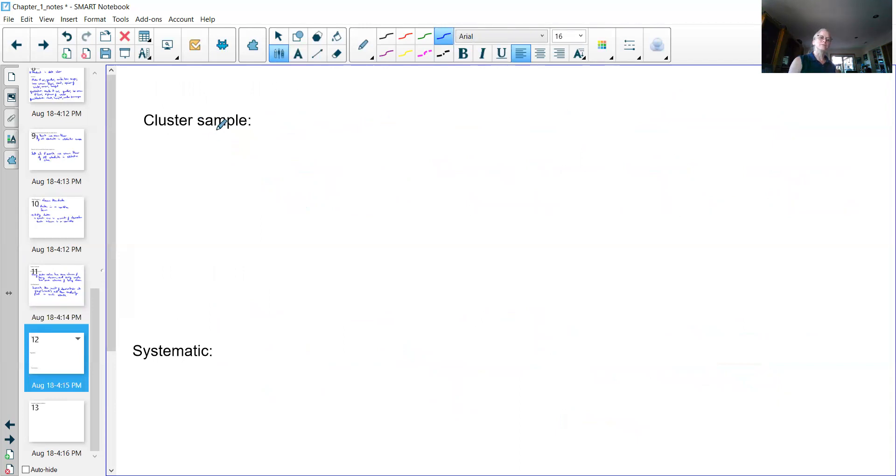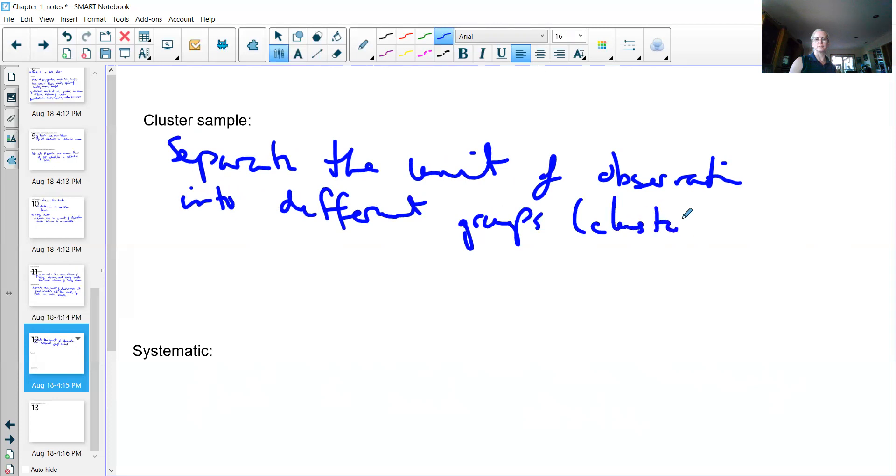Another kind of sample is called a cluster sample. A cluster sample is very similar to a stratified in some ways, and a lot of people get them confused, but there's a really big difference. In a cluster sample, you separate unit of observations into different groups which we call clusters, randomly pick a cluster, and then...